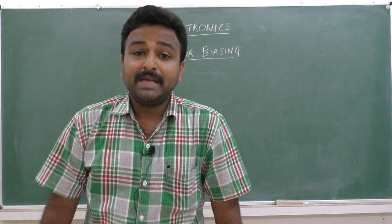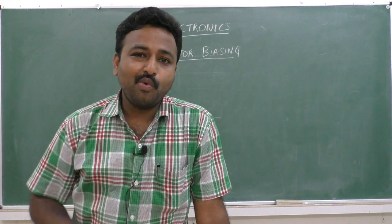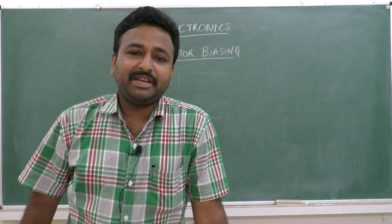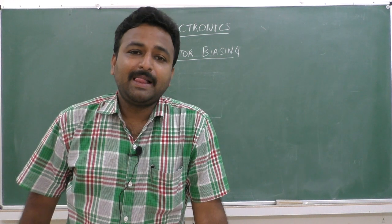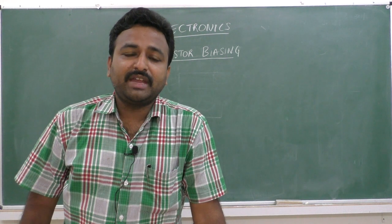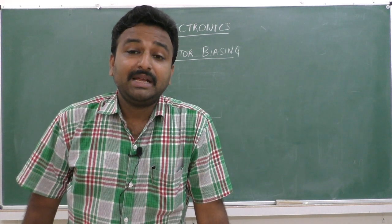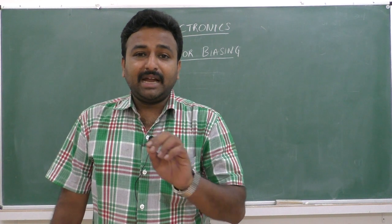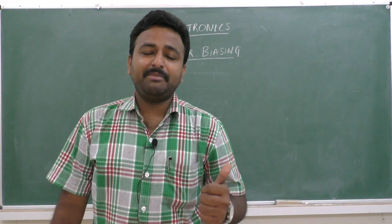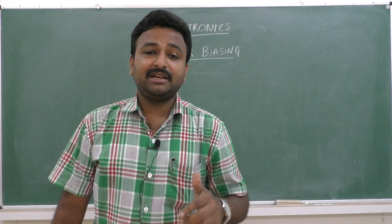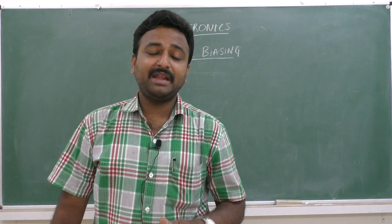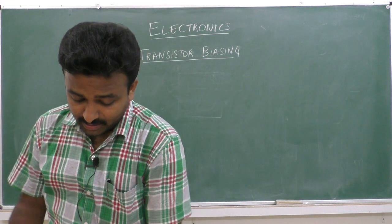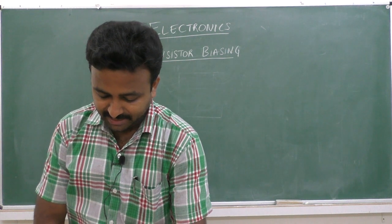In the last academic year, you studied semiconductor diodes. Semiconductor diodes had only one P-N junction and two terminals. One terminal was known as cathode whereas the other terminal was known as anode — also called P-terminal and N-terminal. But a transistor has three terminals and two P-N junctions. These three terminals have different names: one is the emitter terminal, the middle one is the base terminal, and the last one is the collector terminal.